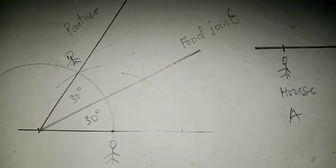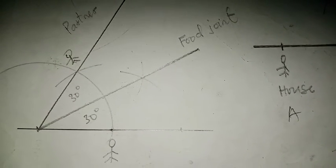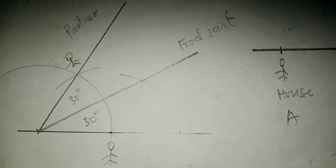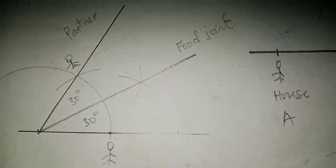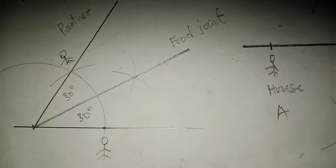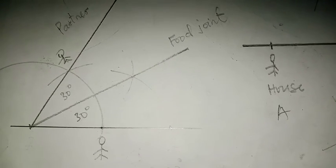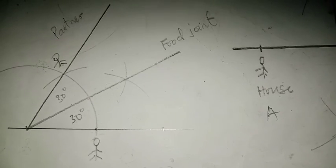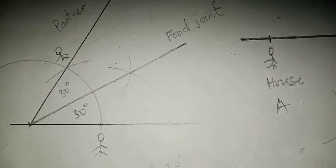The key takeaway is that we've learned how to construct 60 degrees as well as 30 degrees using the idea of bisection in mathematics. If you want to know more about constructing other angles, reach us in the comment section. If you've enjoyed this video, don't forget to give us a thumbs up and subscribe to the channel for more content like this.